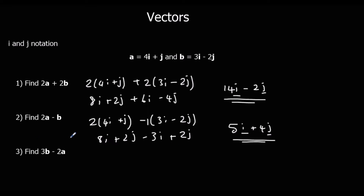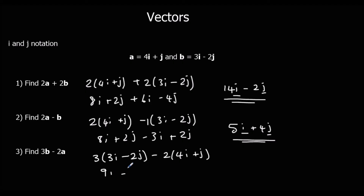And finally, 3b minus 2a: so 3 lots of (3i minus 2j), minus 2 lots of (4i plus j). That's 9i minus 6j, minus 8i minus 2j, which gives i minus 8j.